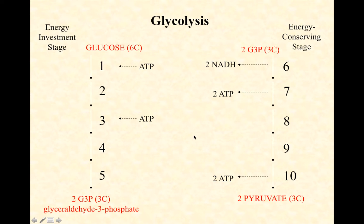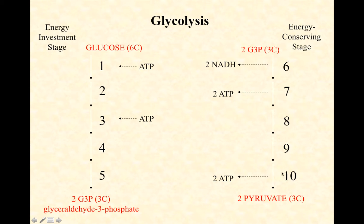Our six carbons in glucose will be found in these six carbons in pyruvate. It's going to take 10 enzymatic steps to get there. Do not memorize the names of the enzymes; do not memorize all of the intermediates — I will show you which ones you need to know as we go along.